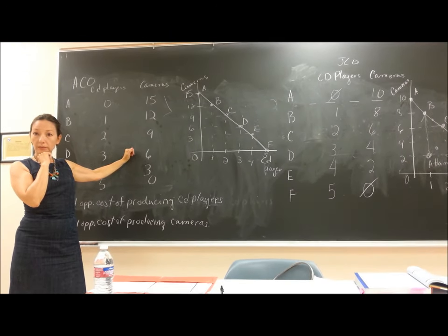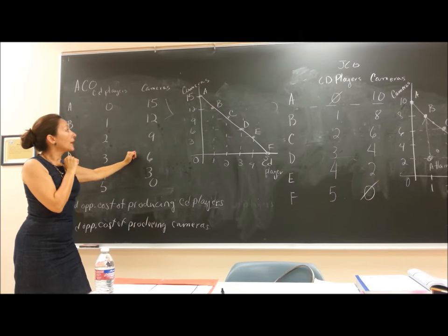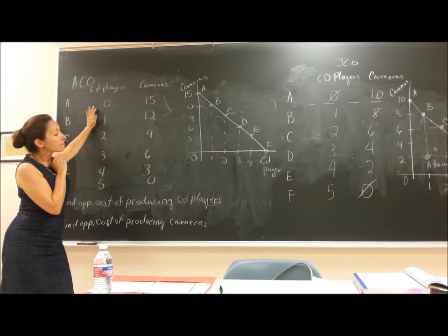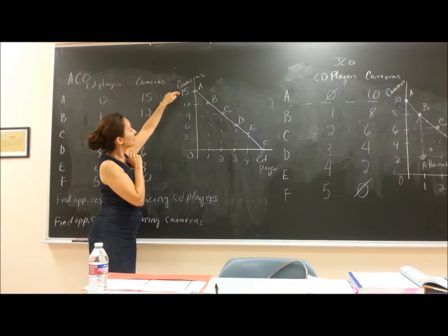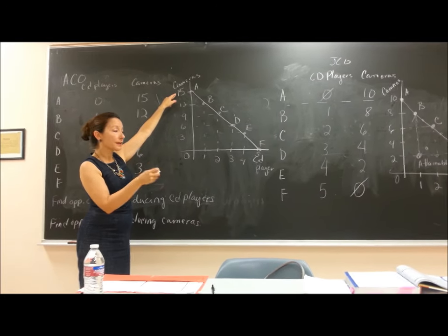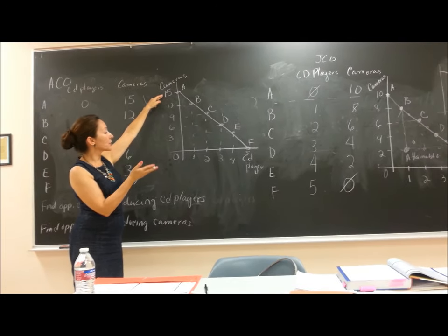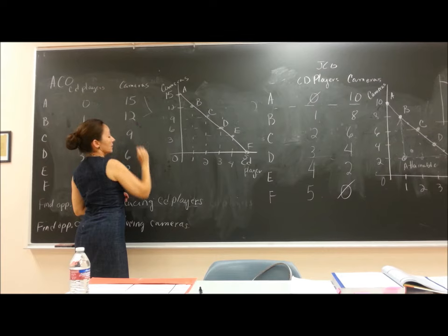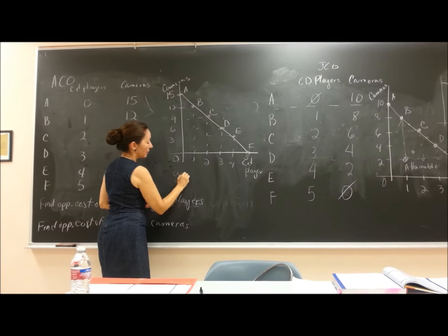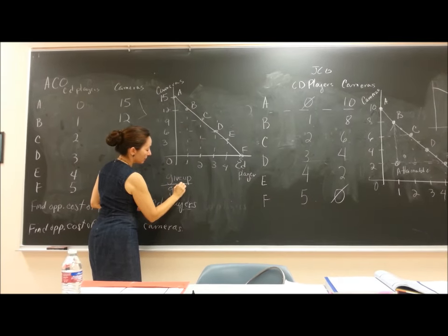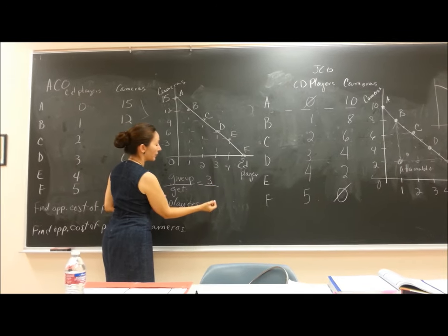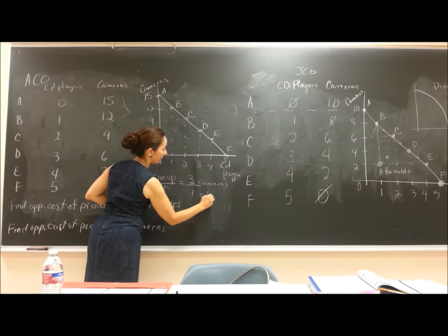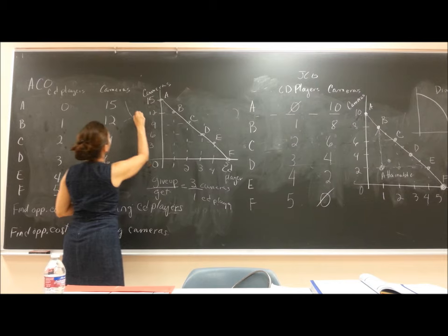What is the opportunity cost of producing CD players for ACO? Moving from point A, ACO gives up three cameras to get one CD player. Using our formula — what you give up over what you get — that's three cameras divided by one CD player, giving an opportunity cost of three.